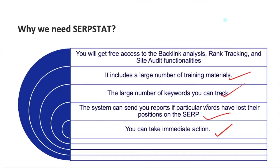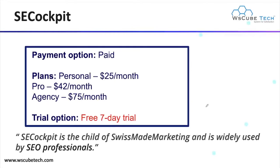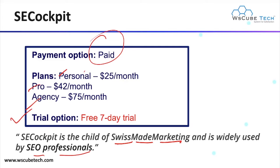The next tool is SE Cockpit, a child tool of a company called Swizmate Marketing, and it is widely used by SEO professionals. It is a paid tool with a 7-day free trial. After the trial, you must pay for continued use. Plans are: Personal at $25 per month, Pro at $42 per month, and Agency at $75 per month.